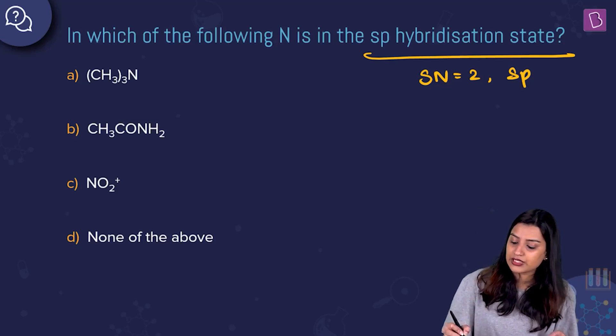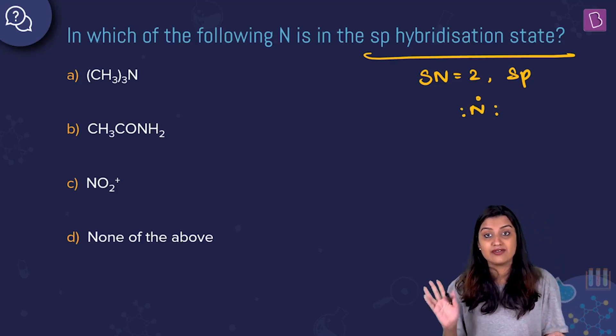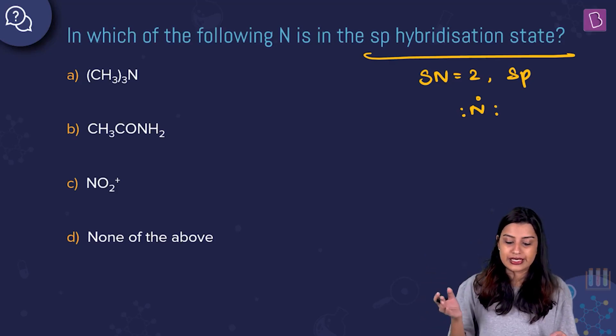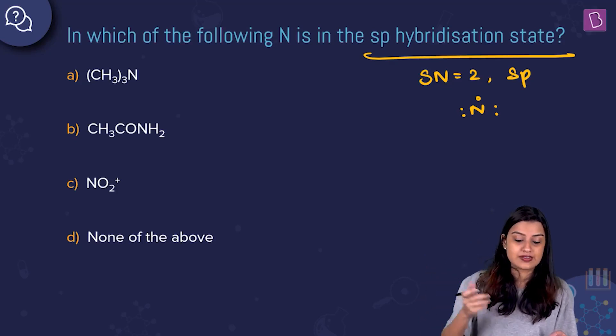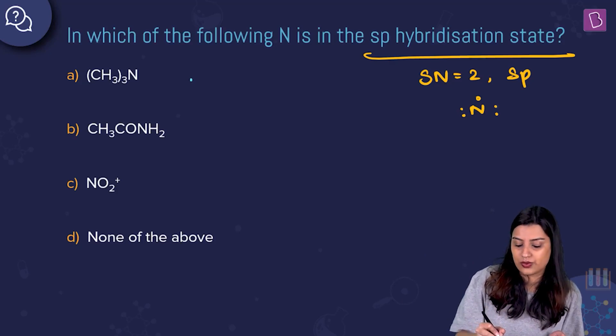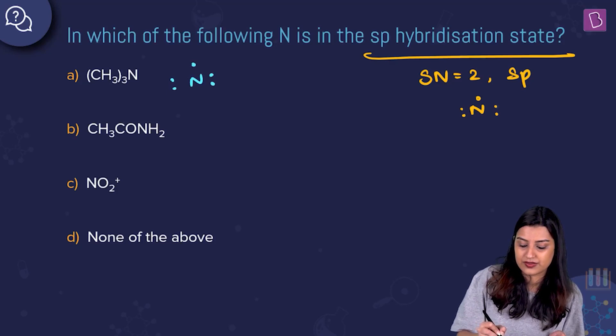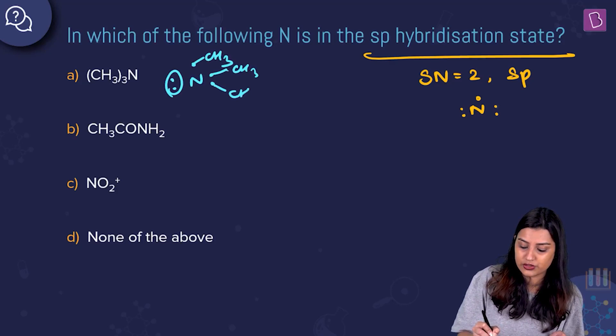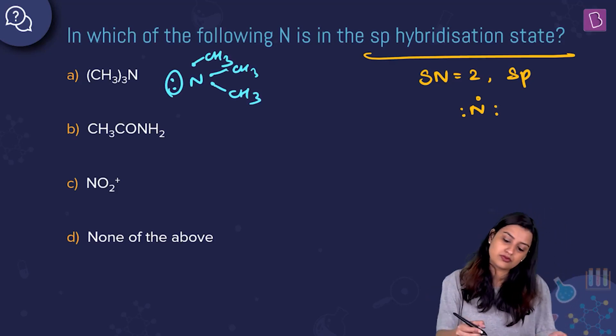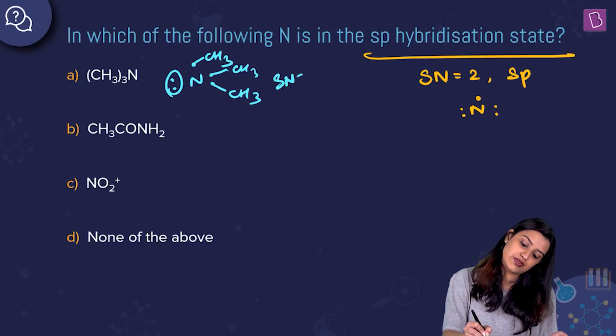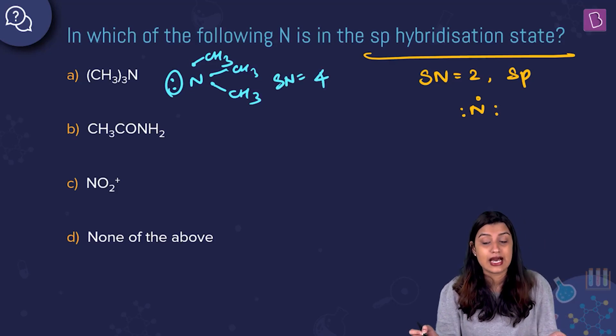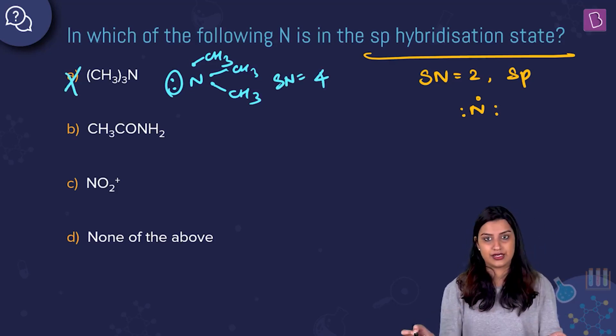Nitrogen has 5 electrons in its valence shell. Starting with option A, (CH3)3N. Nitrogen has one lone pair and bonds with the individual methyl ions. You have steric number equal to 3 bond pairs, 1 lone pair, steric number is equal to 4. This is going to be sp3 hybridized, not sp hybridized. Discarding it.